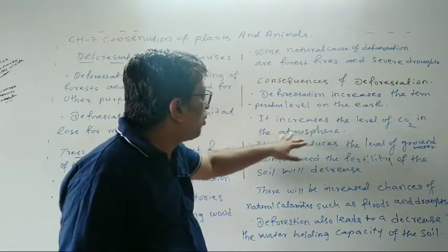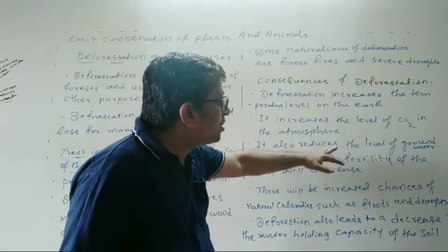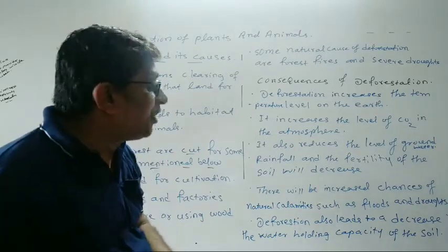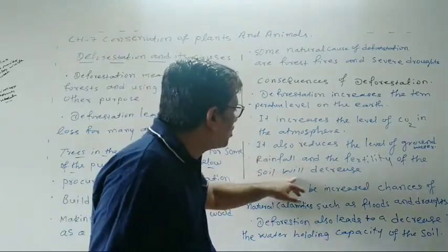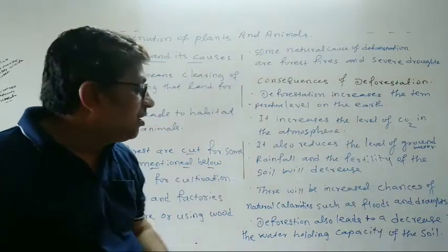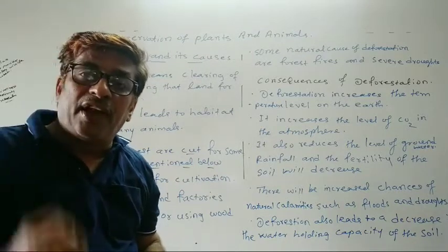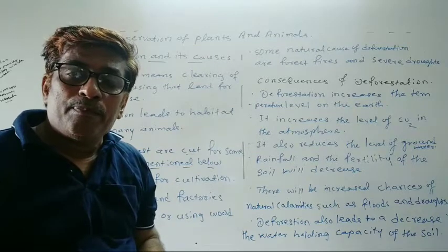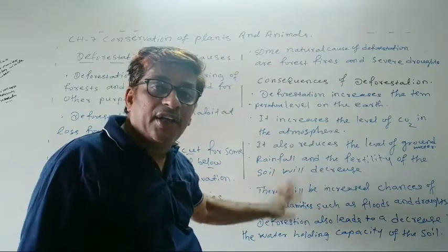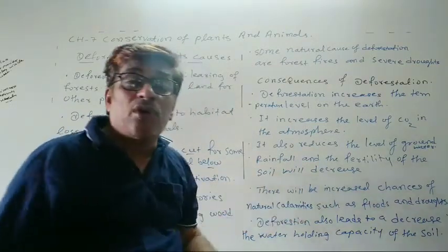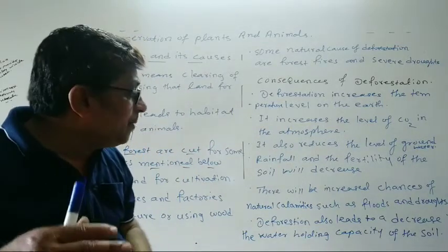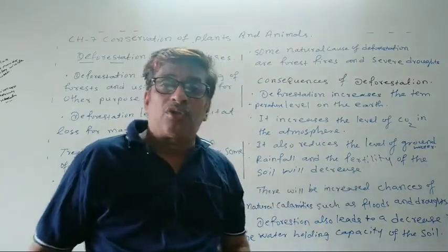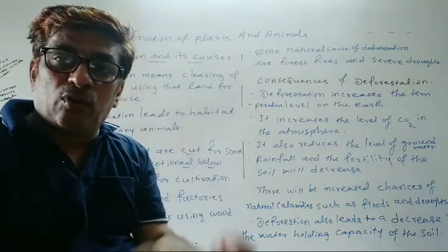It also increases the level of carbon dioxide in the atmosphere. The third aspect is it also reduces the level of groundwater. Due to increased temperature, the groundwater level also reduces. Rainfall and fertility of the soil will decrease — because trees attract rain. If there are no forests, rainfall reduces, and there will be increased chances of natural calamities — natural disasters like floods and droughts.